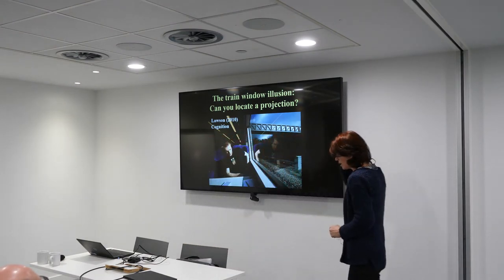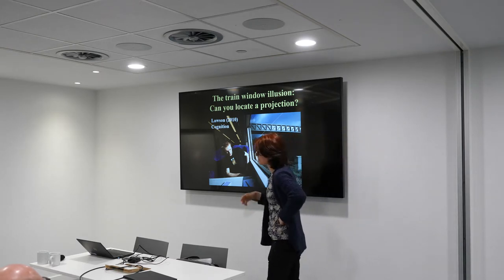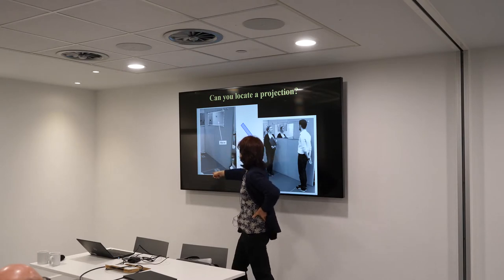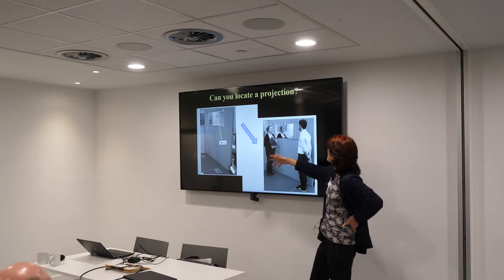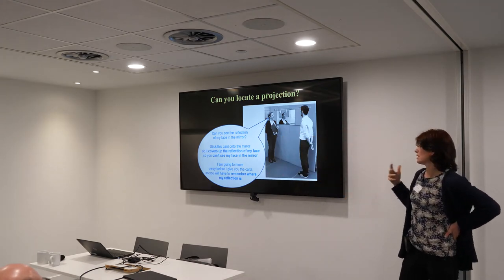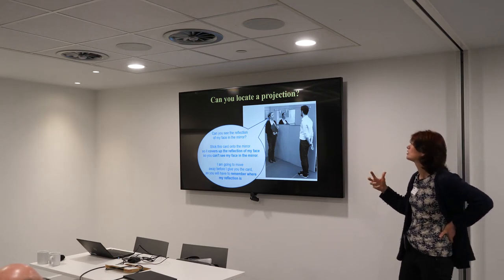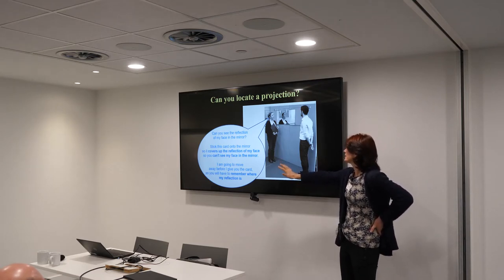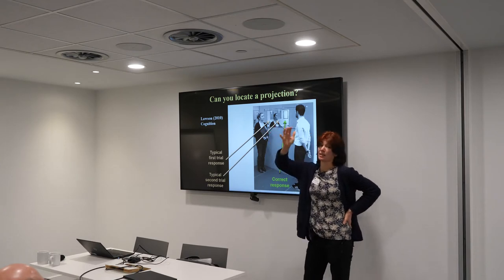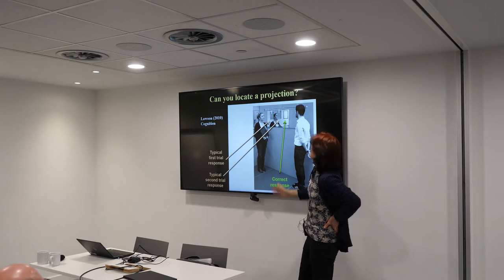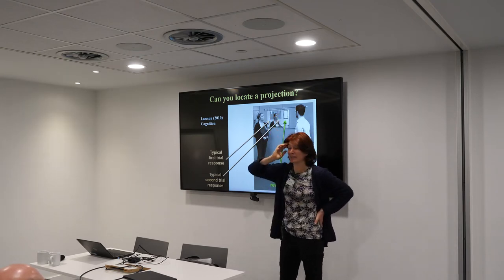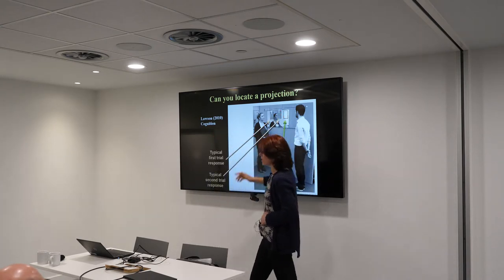How about locating projections? In a typical scene where you're sitting on a train and you see somebody opposite you reflected, if we do that in the lab with people standing equidistant on footprints from a mirror, the experimenter asks the participant to stick a card onto the mirror to cover up the reflection of her face. She warns him before moving away, so he'll have to remember where her reflection is. Their first go is to put the card pretty much next to her — they think the reflection is next to the side of her. Their second go is better, at least in the right direction, but on average still significantly off the correct answer. So people can't locate projections.